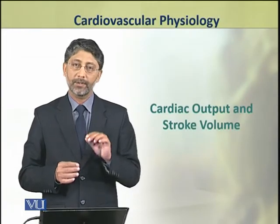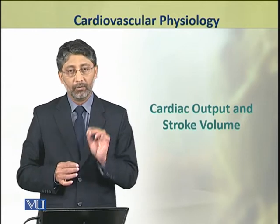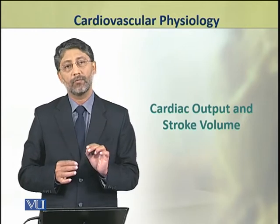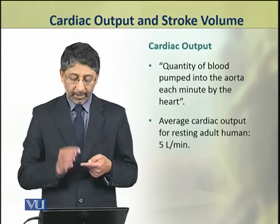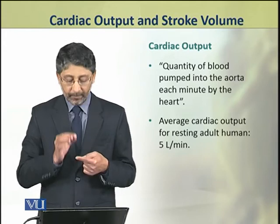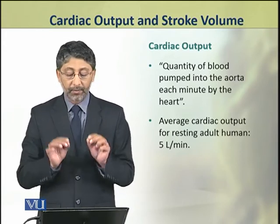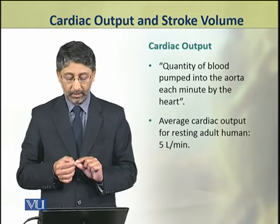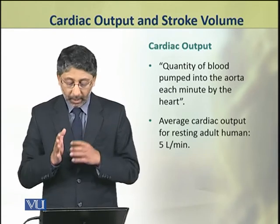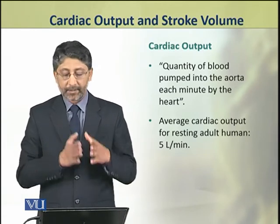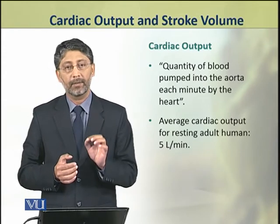In this topic we shall discuss cardiac output and stroke volume. Cardiac output is the quantity of blood pumped into the aorta each minute by the heart. The average cardiac output for a resting adult human is about 5 liters per minute.